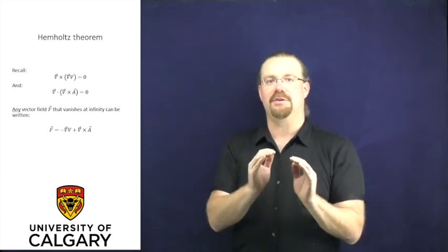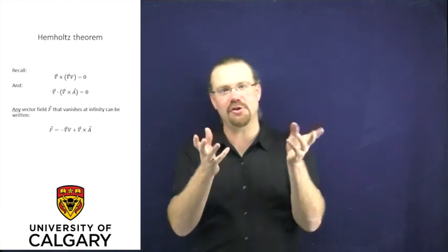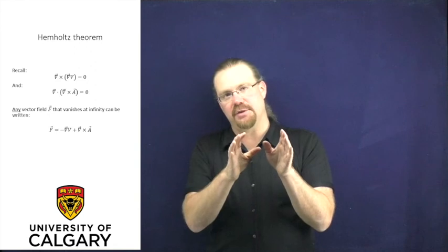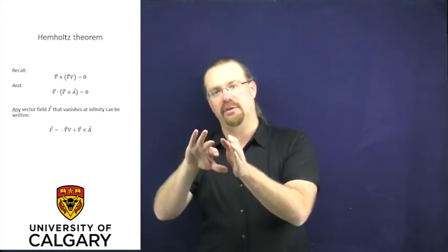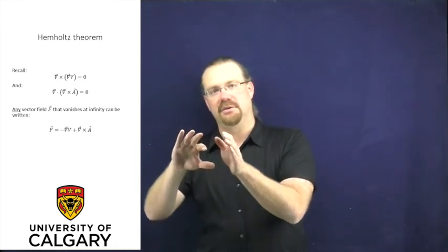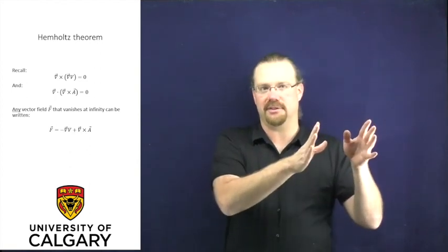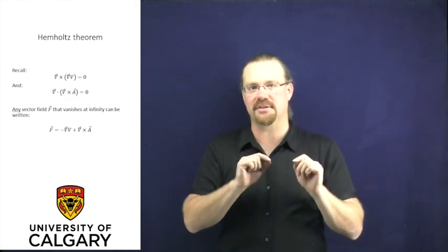Helmholtz's theorem states that we can take any generalized vector field and break it into two parts: a solenoidal part where the divergence is zero, and an irrotational part where the curl is zero. This is going to have some really deep implications for physics.